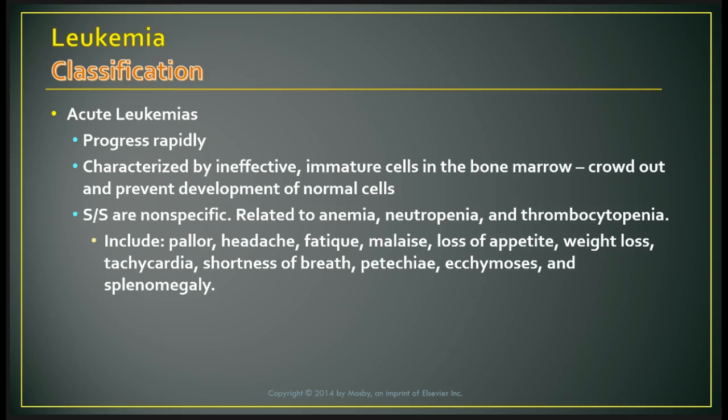Acute leukemia develops very rapidly and is characterized by ineffective immature cells in the bone marrow that crowd out and prevent development of normal cells. Signs and symptoms are nonspecific. The patient presents with anemia, neutropenia, and thrombocytopenia. They may be pale, complain of headache, be fatigued, have loss of appetite, weight loss, shortness of breath, and petechiae covering the body.